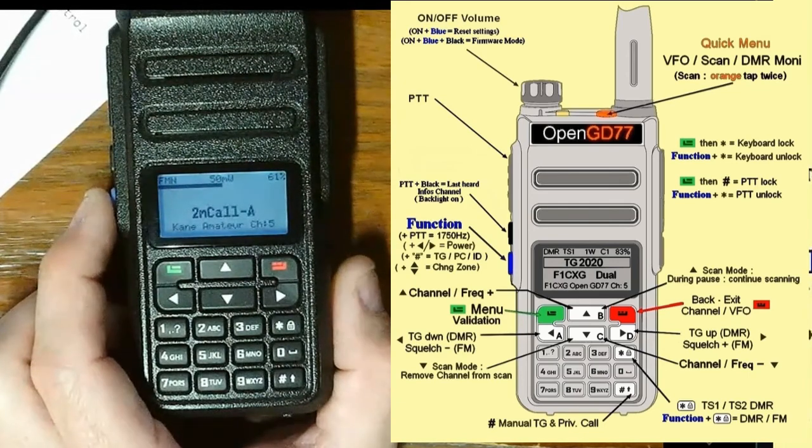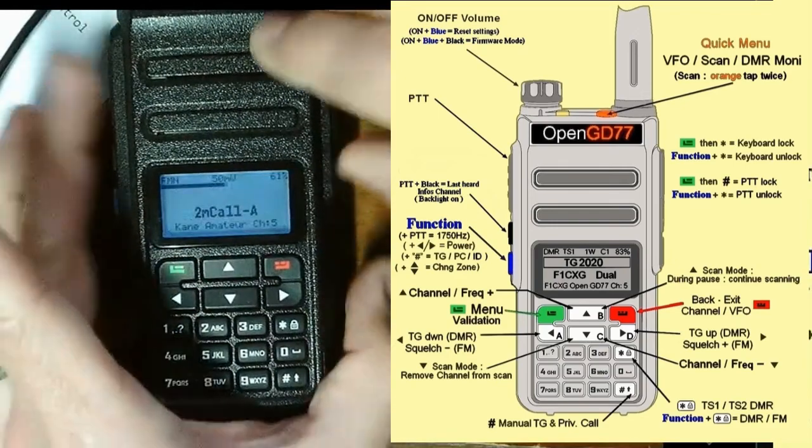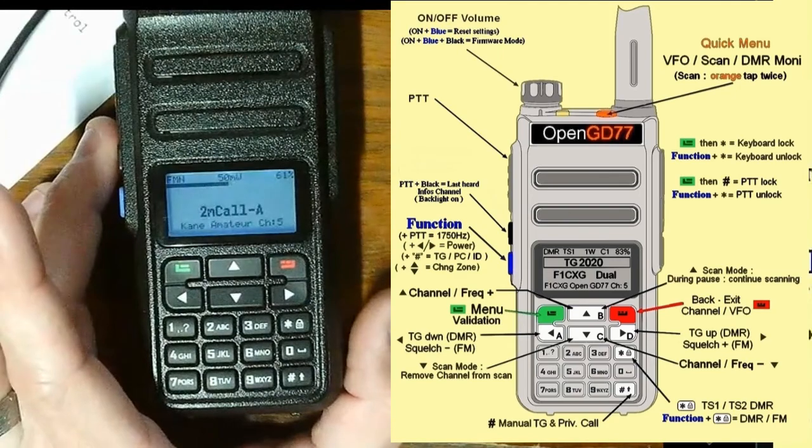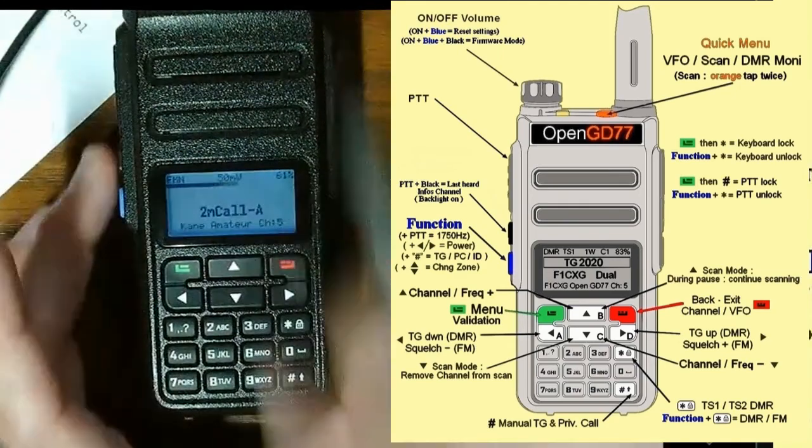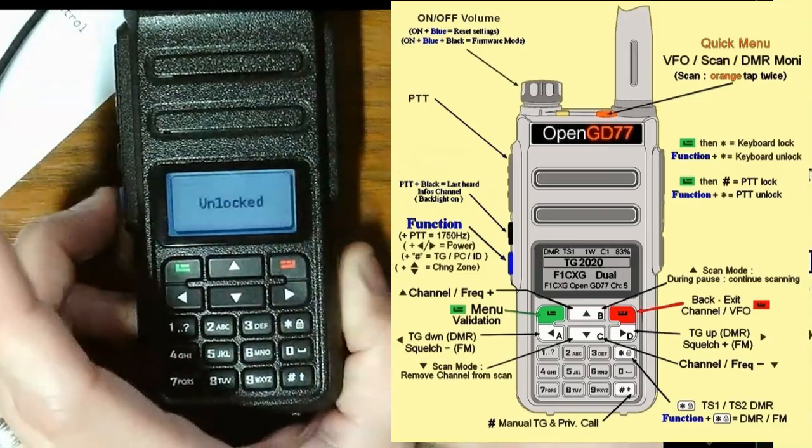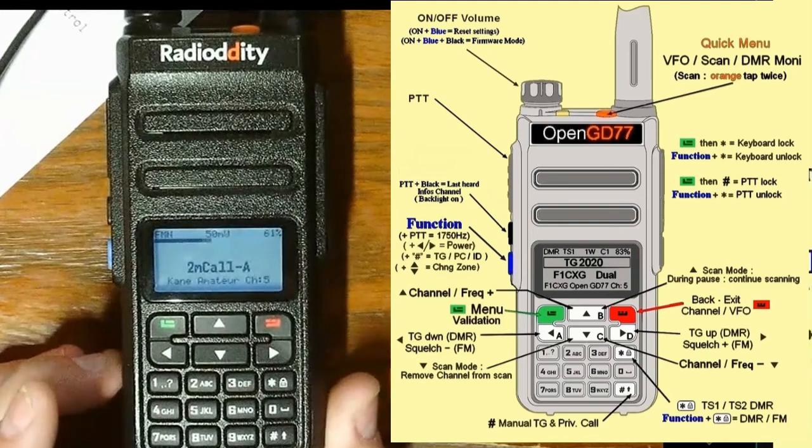If I wanted to do my push to talk lock. Let's try that again. Press this. And that. There we go. Perfect. So, I had done the menu lock. Sorry about that. Keyboard lock. So, then to unlock it. All I have to do is function and star. And now my push to talk is unlocked. And I'm not going to press that. Because I don't want an interference again.